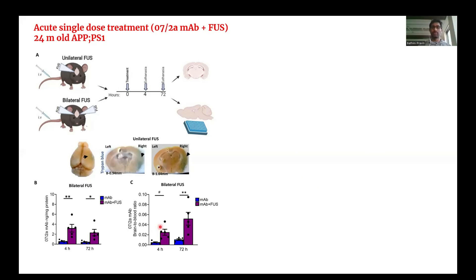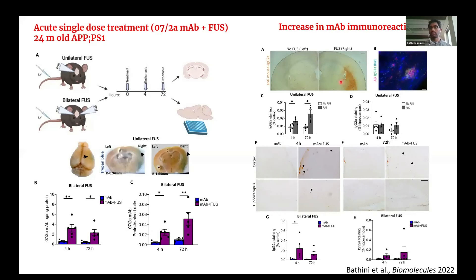We analyzed the brain-to-blood ratio as an indication of equilibrium across the system. These analyses showed increased brain-to-blood ratio for the 7-2AK monoclonal antibody after focused ultrasound and combination therapy. We also analyzed the immunoreactivity of the antibody in the brain, both in the hippocampus and cortex. Most immunoreactivity was found in the cortical region and regions close to the cortex, with less exchange into the hippocampus. Importantly, the focused ultrasound study identified a significant increase in antibody immunoreactivity levels, and increased immunoreactivity was also seen in bilateral focused ultrasound mice, but only at four hours in the cortex.